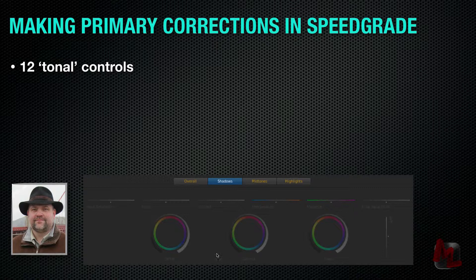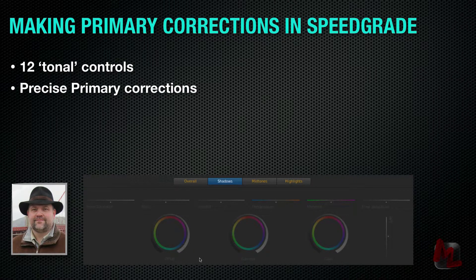What you need to understand is this three-way control is replicated four times: once for the overall image, and then once each for shadows, mid-tones, and highlights — essentially giving you 12 tonal controls. Instead of a three-way color corrector, we are working with a 12-way color corrector. And if you're coming from curves in Avid, Resolve, or Apple Color, all you've got to do is realize that you have three points for shadows, three points for mid-tones, three points for highlights. Plot these on a curve and now you have your curve manipulations — very precise primary corrections.